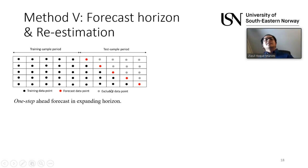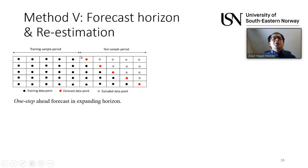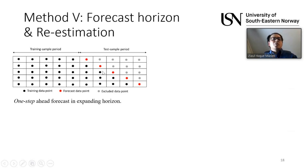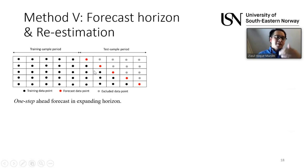Whenever we have new data available, we incorporate it in the model. Normally, without re-estimation, we use the same parameters every time to forecast new data points even as new information arrives. When I say re-estimation, I mean that I re-estimate the model each time a new data point is available — not reusing old parameters. Using R software I could do this, though it took much more computation time, it still works fine.